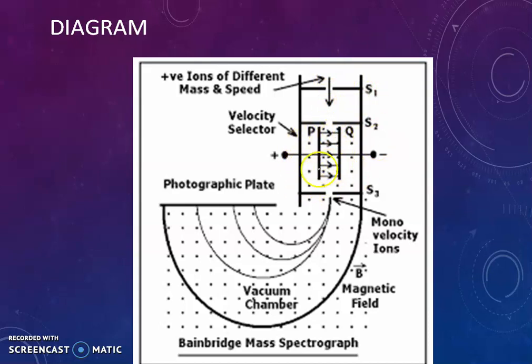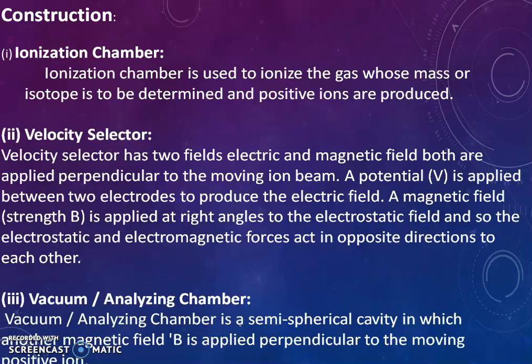After that, velocity selector circuit is there. Then the ions passing through the slit S3 enter inside the vacuum chamber and finally hit the photographic plate. This is the diagram for study of Bainbridge mass spectrograph.